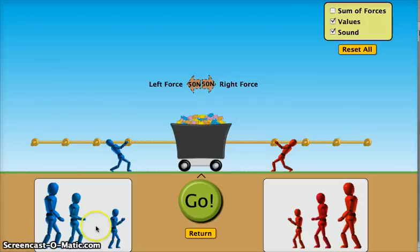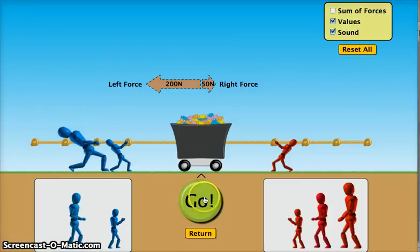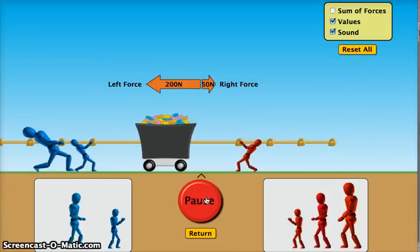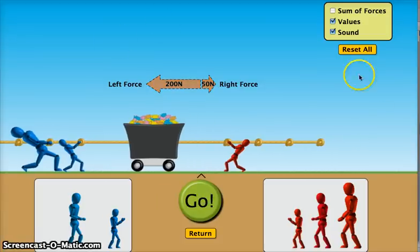Question 2 asks about the net force when the blue team gets the extra person. So here is the blue team getting an extra person. And now you can see what happens. Again, use the values up here to calculate the net force acting on the cart.